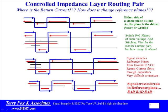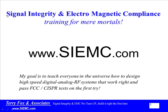There is one very interesting exception to that rule, but for most purposes let's leave it there. Signal integrity and electromagnetic compliance — training for mere mortals. More information is available at SIEMC.com. My goal is to teach everyone in the universe how to design high-speed digital analog RF systems that work right and pass FCC tests on the first try.